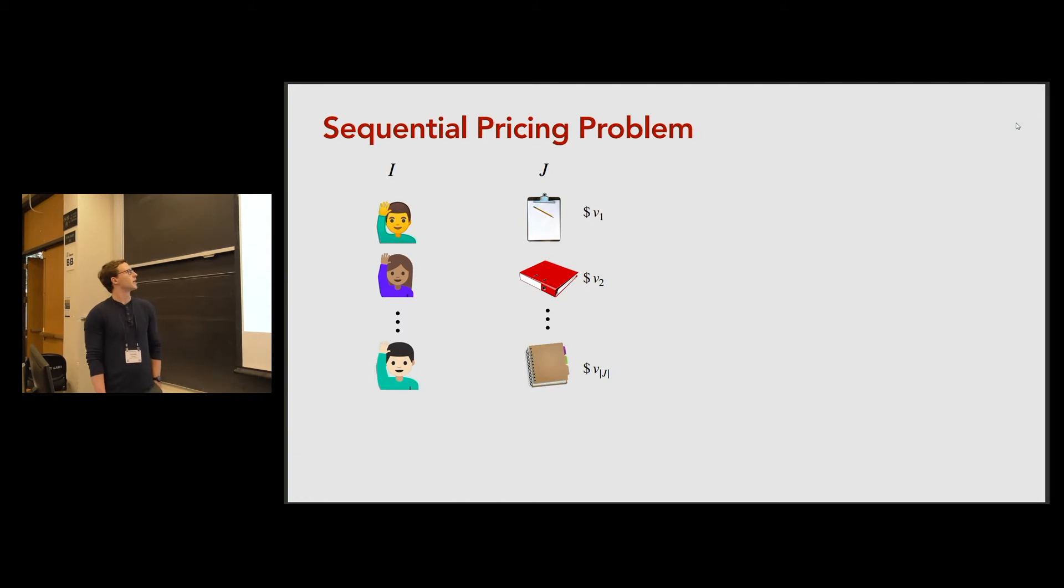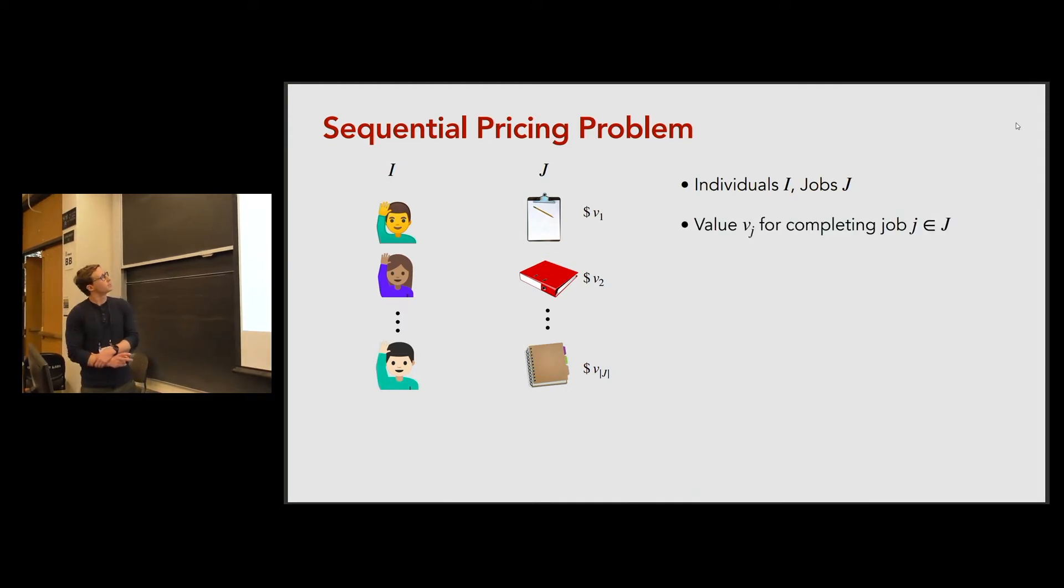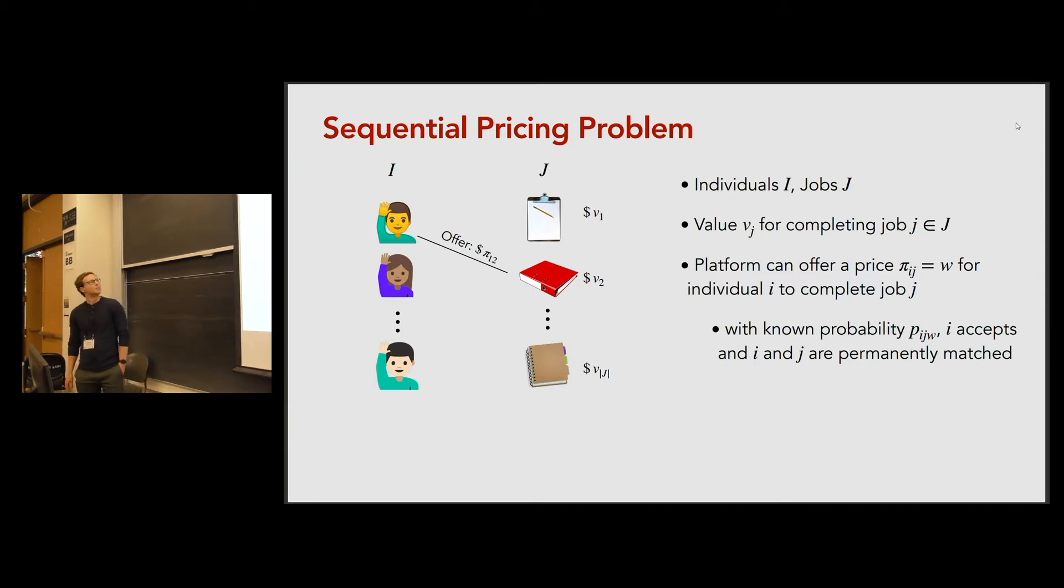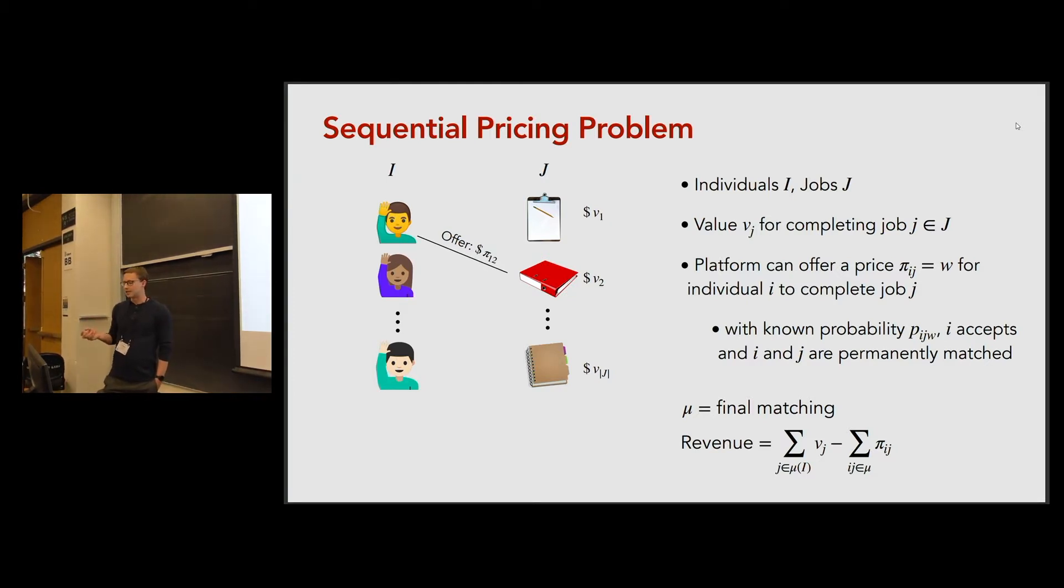We model this by something we call the sequential pricing problem. In this model there's a set of individuals i and a set of jobs j. Each job j has some value vj for being completed. The way that we can match individuals to jobs is by offering a price pi_ij for individual i to complete job j. For example, we could offer individual one a price of two dollars to complete the second job. We assume that if we offered some price w with a known probability p_ij(w), i is going to accept and i and j are then permanently matched. If i rejects, then i and j will never be matched. So in this way we're going to build some matching mu and the revenue of this matching is naturally defined as the total values of all of the jobs that we've matched minus the sum of all of the prices along the edges that we've matched. We could also work on optimizing for social welfare, a convex combination of revenue and social welfare, and our results extend there too. But for simplicity for this talk I'll just think about revenue.